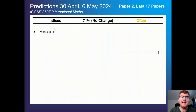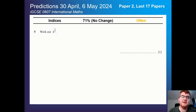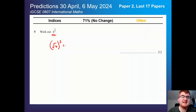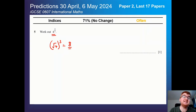First of all, we have indices — no change here at 71%, so still a very often topic. A typical example question requires you to square root 4 and then cube it to get an answer of 8. This is usually a 1 or 2 mark question that you need to be getting on paper 2.